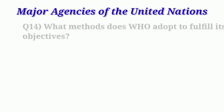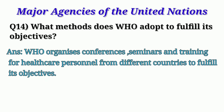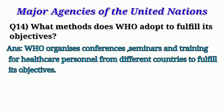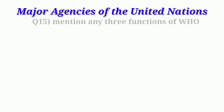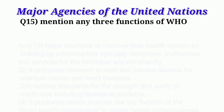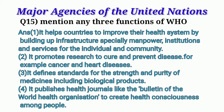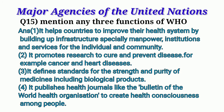Question 14: What methods does WHO adopt to fulfill its objectives? WHO organizes conferences, seminars, and training for healthcare personnel from different countries. Question 15: Mention any three functions of WHO. Instead of three we will do four. First, it helps countries to improve their health system by building up infrastructure, especially manpower, institutions, and services for individuals and communities. Second, it promotes research to cure and prevent disease, for example cancer and heart disease. Third, it defines standards for strength and purity of medicines including biological products.